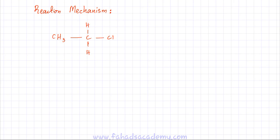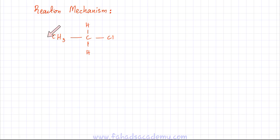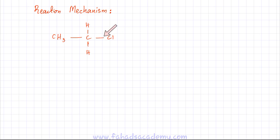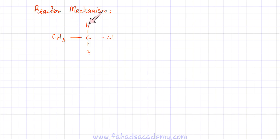Now we are going to discuss the reaction mechanism — the nucleophilic substitution reaction of halogonoalkanes. I have drawn a primary halogonoalkane: carbon bonded to two hydrogens and one Cl, with the rest of the molecule on the left-hand side. The first thing I'm going to talk about is the C–Cl bond. Carbon–hydrogen bonds and carbon–carbon bonds are mostly non-polar, so they don't show any polarity.